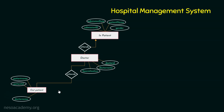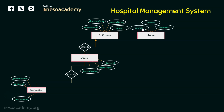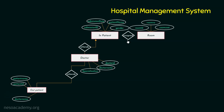Now let's build the ER diagram further. When we talk about inpatients, we need to allocate a room for them. For outpatients, that need not be the case. So we are bringing in another entity: room, described by attributes room ID, room number, and room cost. We are going to establish the relationship between inpatient and room using assigned. Here I am assuming a one-to-one relationship — one inpatient is assigned one room.